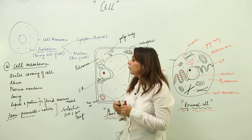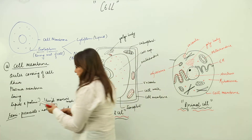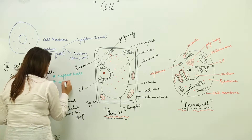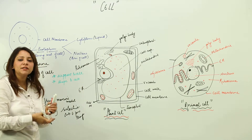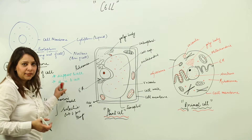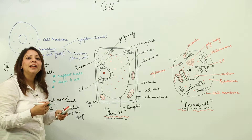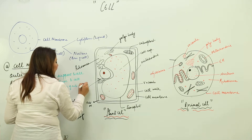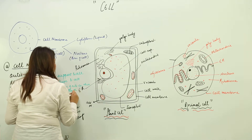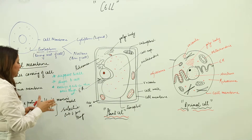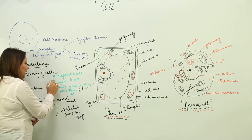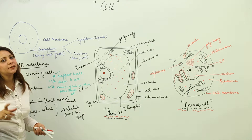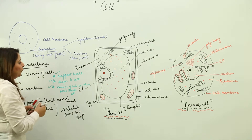The functions of the cell membrane: since it is the outer covering, it provides support to the cell and also provides shape to the cell. Because it is semi-permeable, exchange of substances can also occur through it — selected substances can flow from the cell to outside and from outside into the cell.